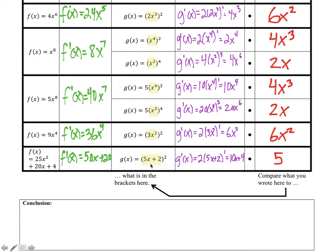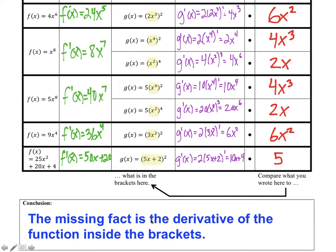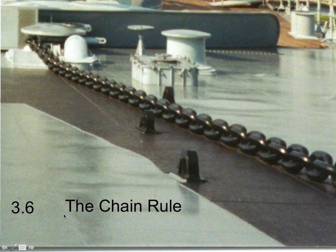This becomes really helpful for the last example where we have a trinomial and can rewrite it as a binomial squared. Taking the derivative by bringing down the 2, times 5x plus 2 to the 1st power, then times the derivative of the inside which is 5, is a much easier way of differentiating — especially if the power is 3, 4, 5, or 6 and you don't want to do all that foiling. Our conclusion is that the missing factor is the derivative of the function inside the brackets. This process is called the chain rule.